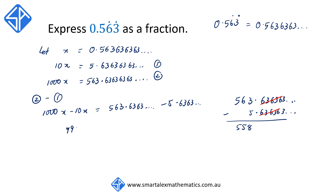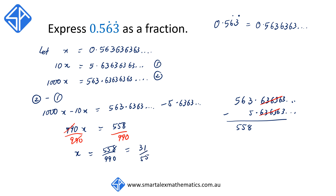So that means 990x is equal to 558. Dividing both sides by 990, this will give us x is equal to 558 over 990, which simplifies to 31 over 55. Since we started off by defining x as being equal to 0.563 repeater, this means that this decimal can be expressed as 31 over 55 as a fraction.